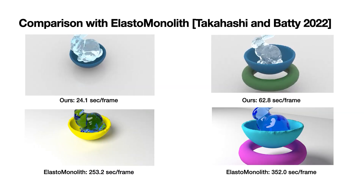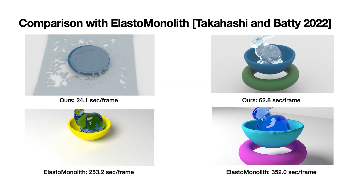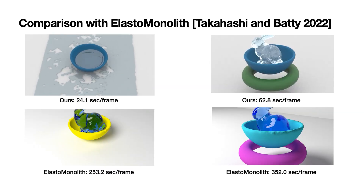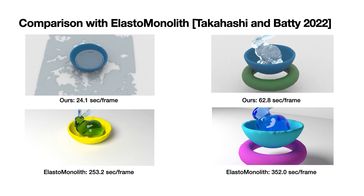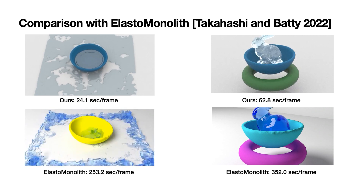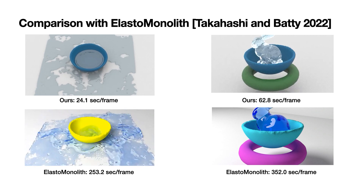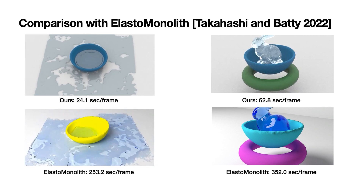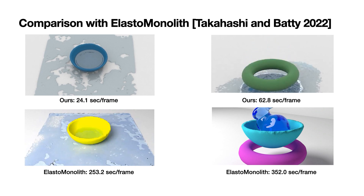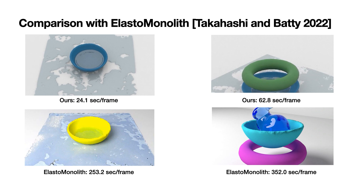We then compare our method with elasto-monolith, which couples Eulerian fluids with Lagrangian solids. Following their simulation settings, we ran two coupling simulations. Without the need to deal with geometric differences, our method is much faster.